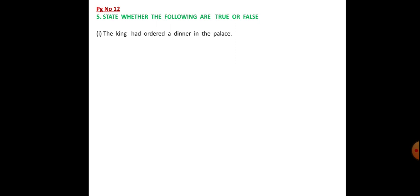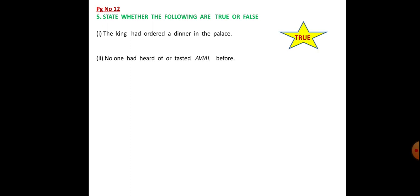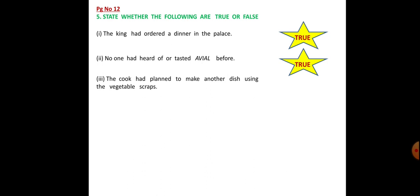State whether the following are true or false. Statement one: The king had ordered a grand dinner in the palace. The answer is true. Statement two: No one had heard or tasted avial before. The answer is again true. Statement three: The cook had planned to make another dish using the vegetable scraps. This is false. The cook had planned to throw away all the vegetable scraps.